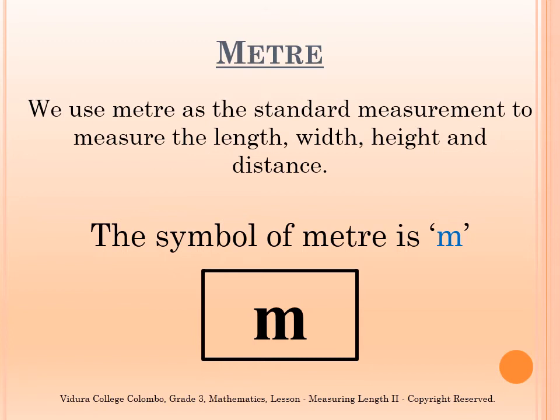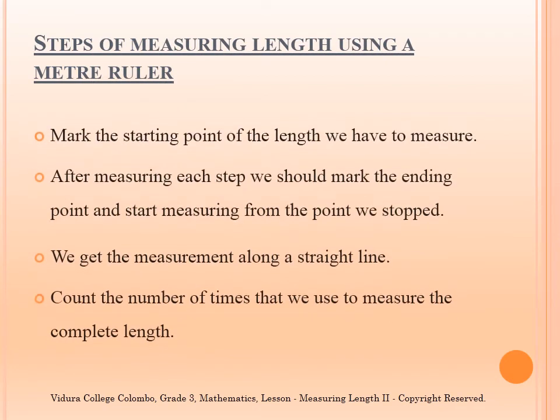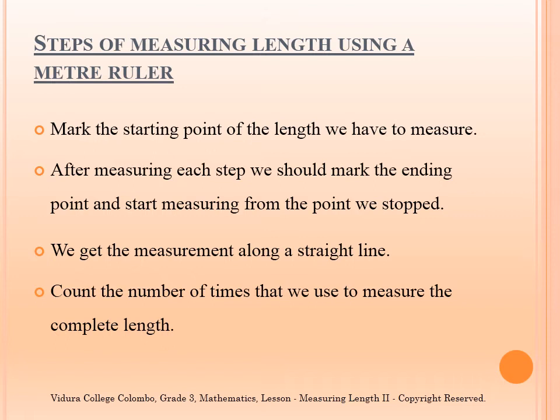So, the symbol for the measurement metre is simply M. Let's see what steps you should follow when measuring length using a metre ruler. First, you must mark the starting point of the length you have to measure. Then, after measuring each step, you should mark the ending point and start measuring from that point onwards. Always remember that you should take the measurement along a straight line. Finally, you can count the number of times you used the ruler to measure the complete length.